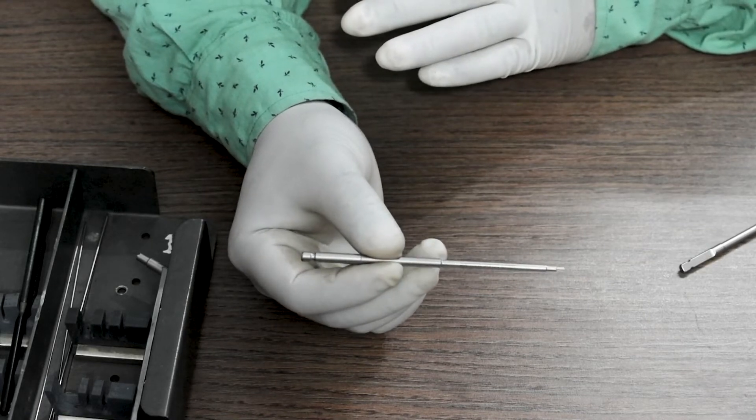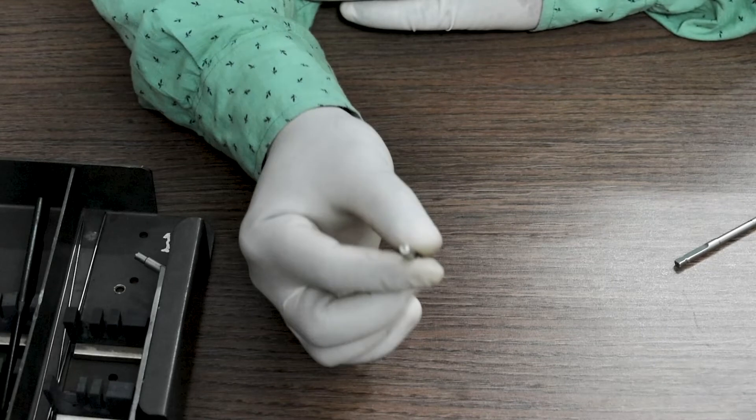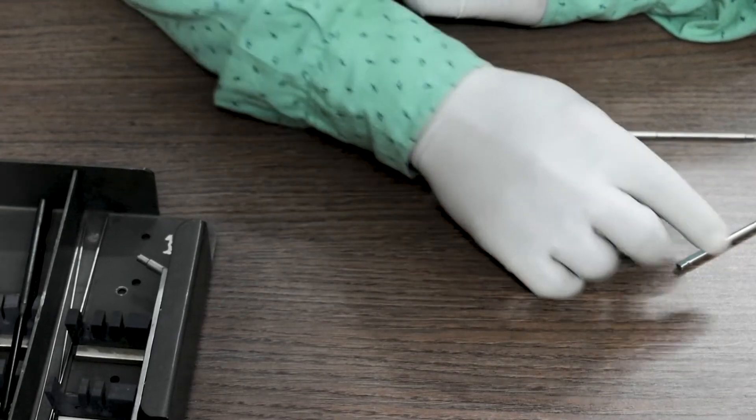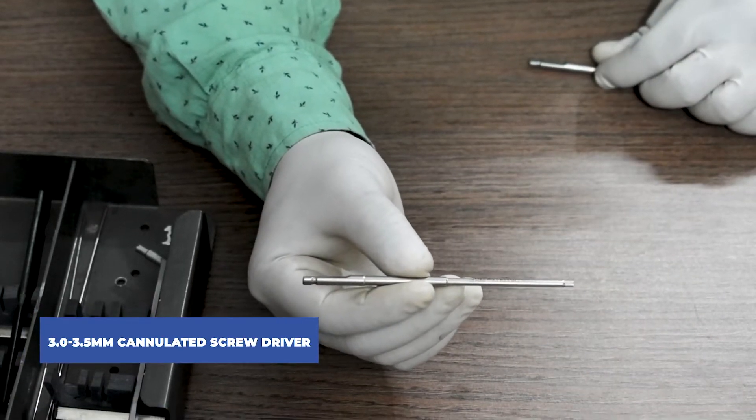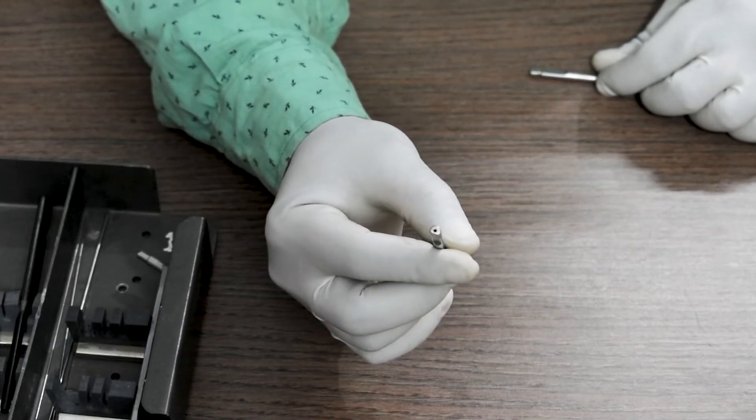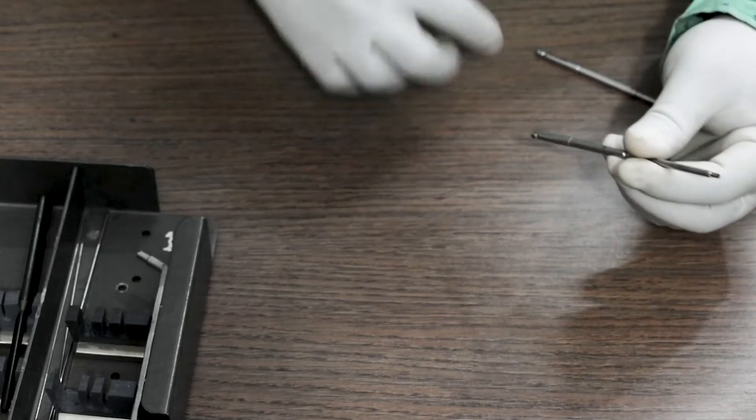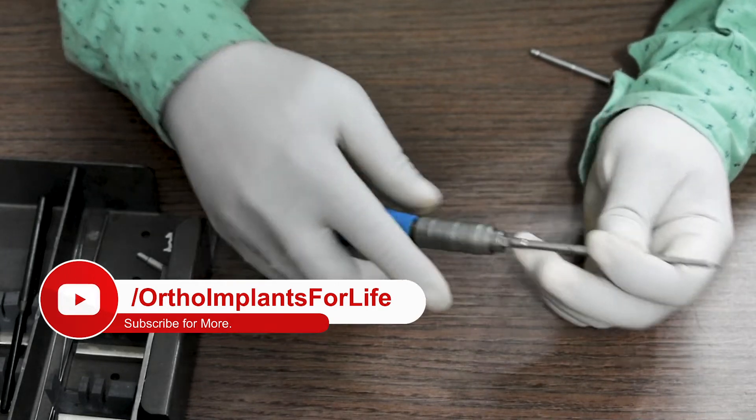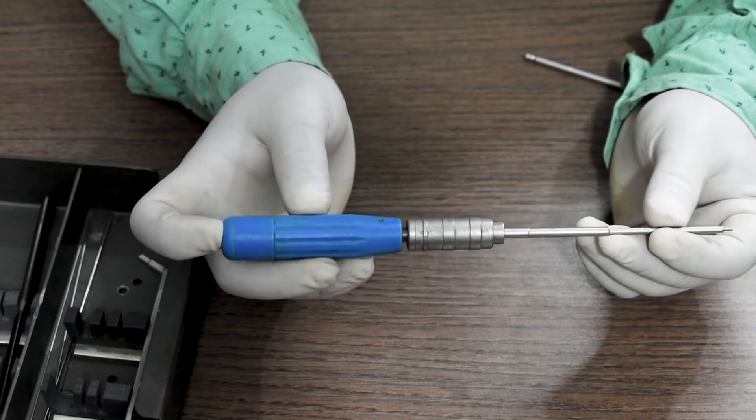with a Quick Coupling handle. As you can see, this is cannulated. This one is 3mm and 3.5mm cannulated screwdriver. You simply connect this with the QC handle as an attachment like this, and you can use this for the procedure.